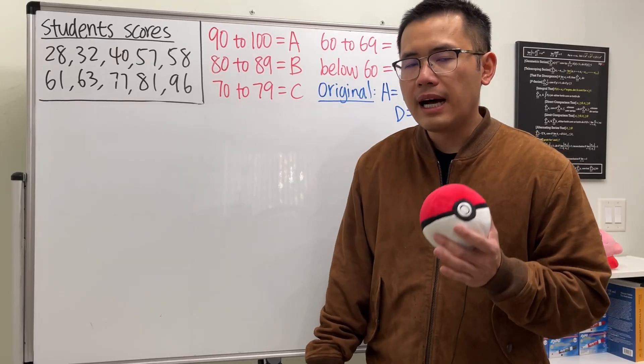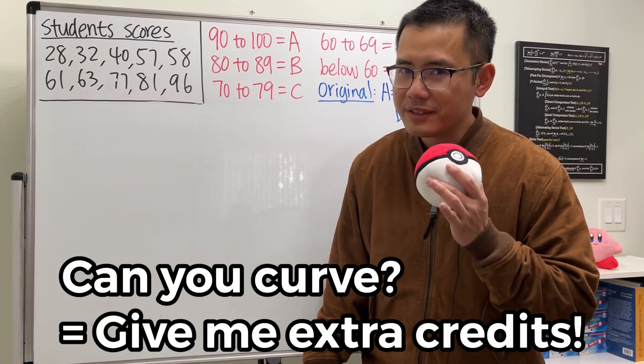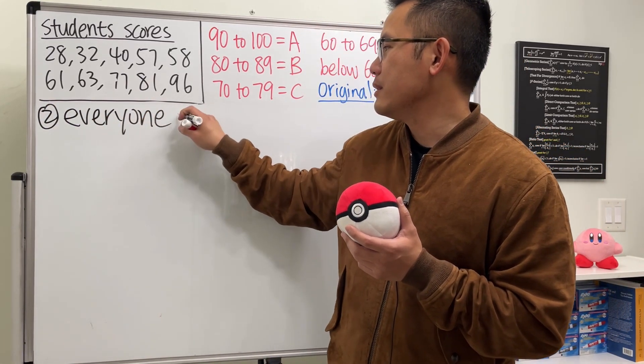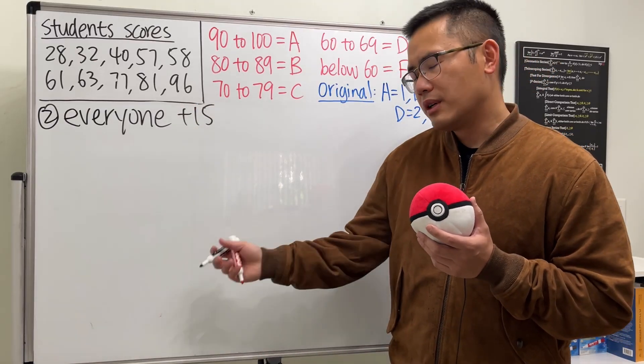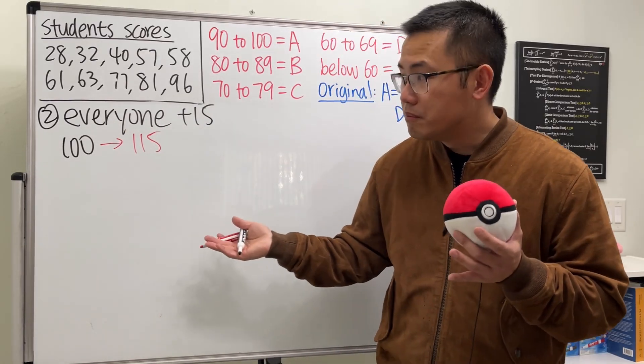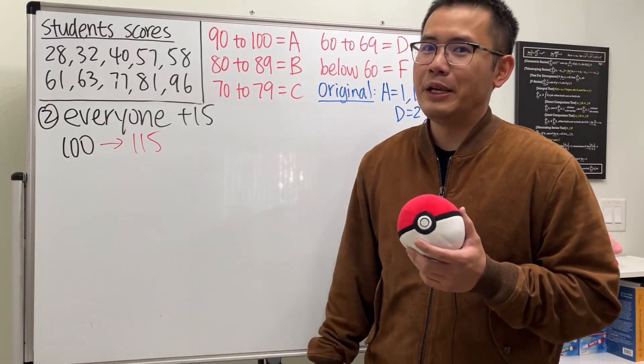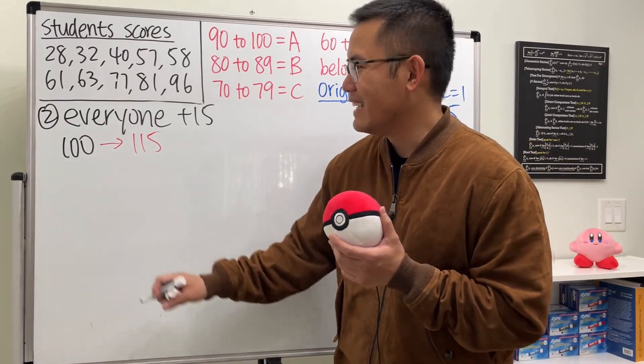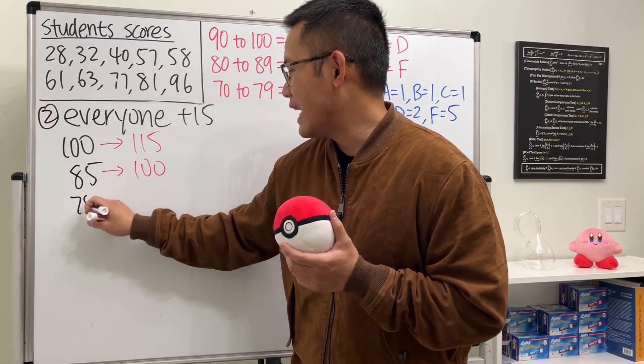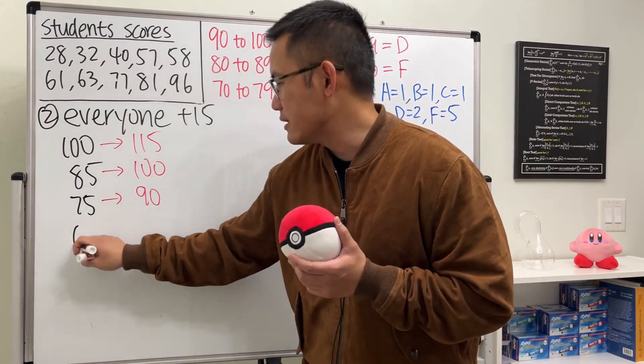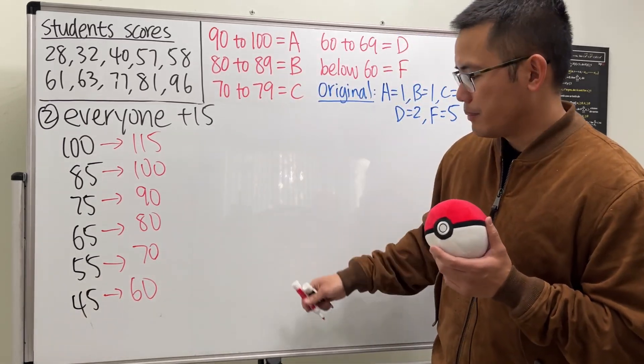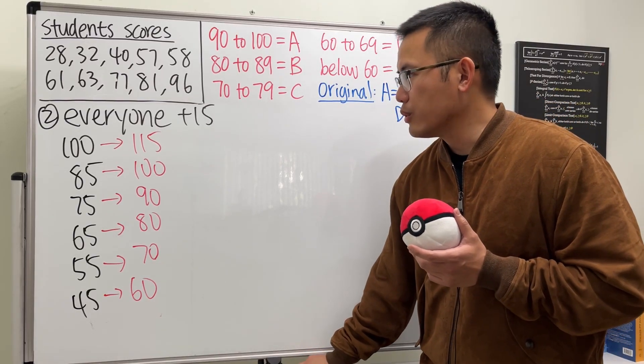Now, let's face it. When students ask you, can you curve, they just want extra credit. So for the second way, why don't we just look at everybody's score and then just give everybody a bonus 15 points. So let's have a look. Originally, if you have 100 points, now you are going to get a total of 115. So you do get that little bonus, even though you had the A originally already. And then if you have 85, guess what? It looks like you have a perfect score of 100 now. And then if you have 75, this is going to give you the A.